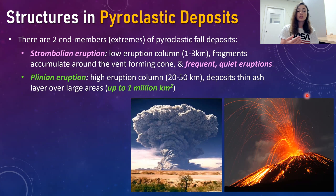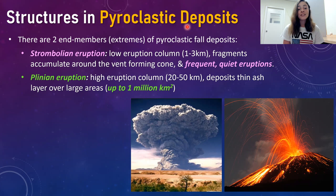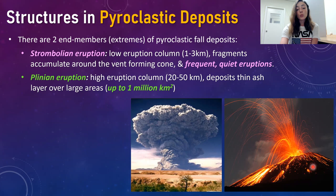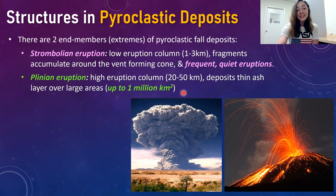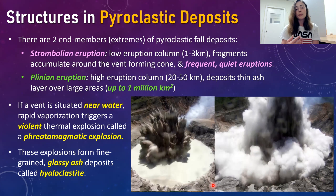There are two end members of pyroclastic fall eruptions: Strombolian and Plinian. Strombolian eruptions have a low eruption column — only 1 to 3 kilometers high — with fragments accumulating around the vent forming a cone, and frequent, relatively quiet eruptions. Plinian eruptions have a high eruption column — 20 to 50 kilometers — and deposit ash layers over a very large area, up to one million square kilometers from a single volcanic eruption.